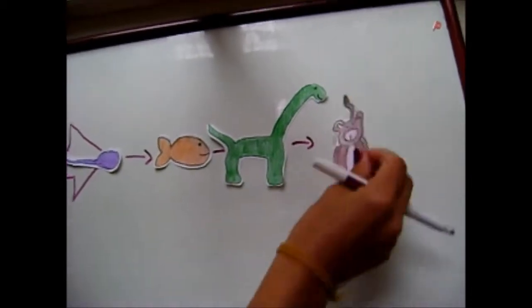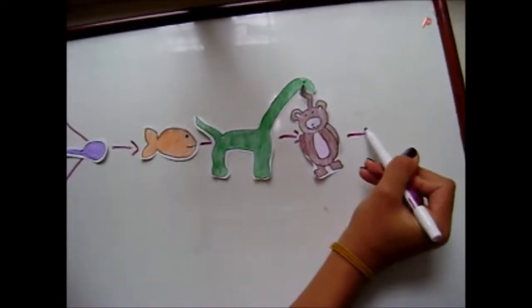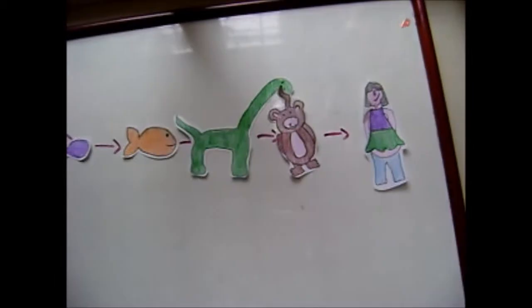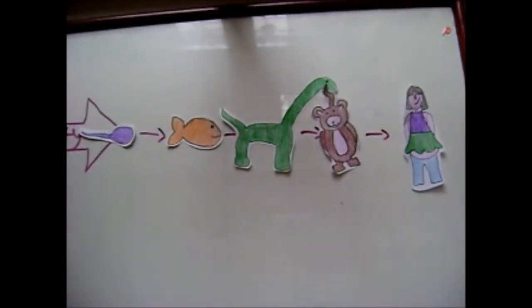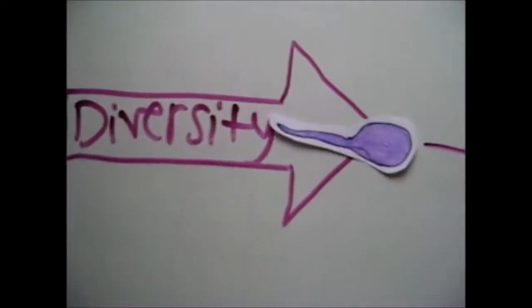Like as we pass from a sperm to a fish, dinosaur, monkey, and a woman. But how does this really happen?